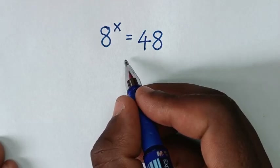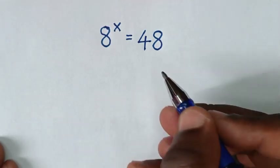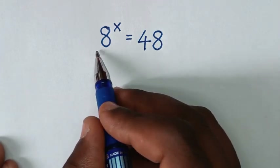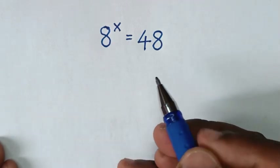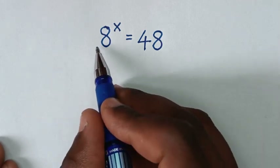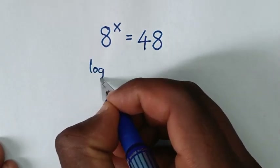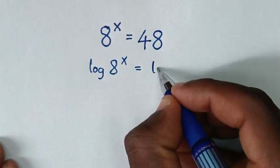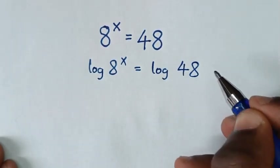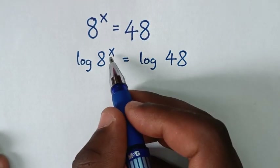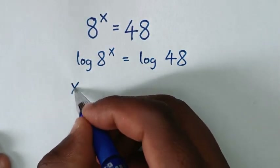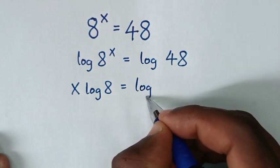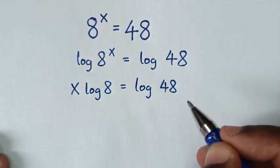Hello, you are welcome to solve this math problem of 8 power x is equal to 48, to find the value of x from this equation. In the first step, we'll apply log on both sides, so it will be log of 8 power x is equal to log of 48. Then this power of x will move to the base, so it will be x times log of 8 is equal to log of 48.